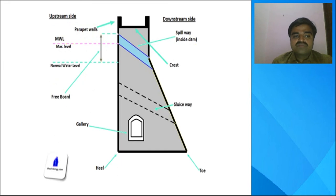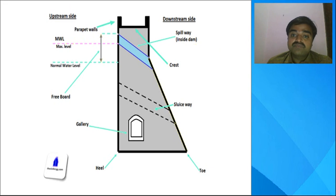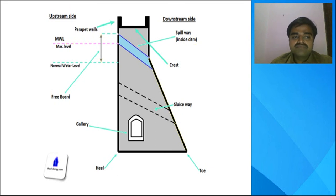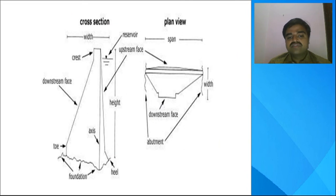All the terms just discussed can be seen in the cross-section of the dam. You can observe the upstream side, downstream side, normal pool level, freeboard, galleries, toe and heel portions, and the spillway location. The next figure shows the plan view and cross-section of the dam, where you can see the crest, width, downstream face, axis, foundation, and heel and toe clearly.